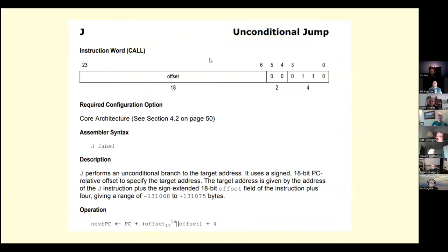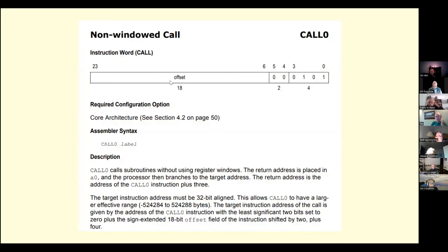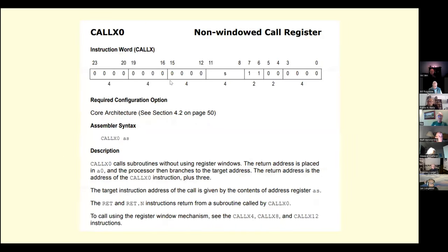There are things like a jump instruction where there's an offset built into the instruction. Those are the kinds of pieces we have to work with. As mentioned, there's this calling convention — there is support for a vanilla calling convention on the CPU where it is more like a branch and link. That's the call-zero option, but there's also a version that takes a register as an operand.